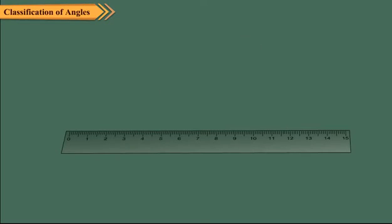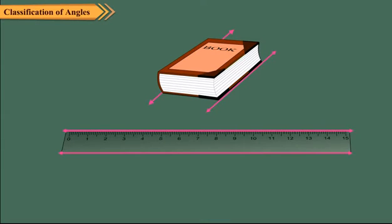Observe the opposite edges of your ruler. The opposite edges of a ruler or a book give an example of parallel lines. In fact, two lines which never intersect even if produced are called parallel lines.